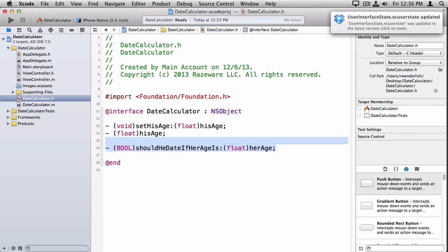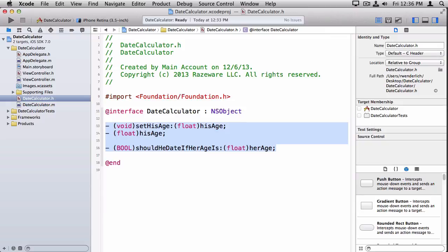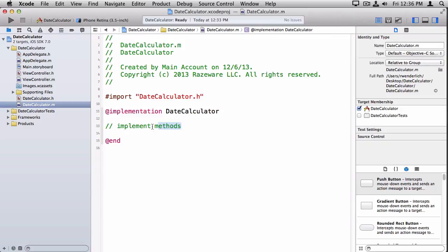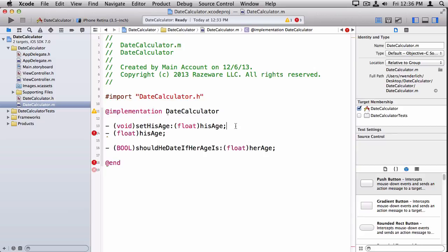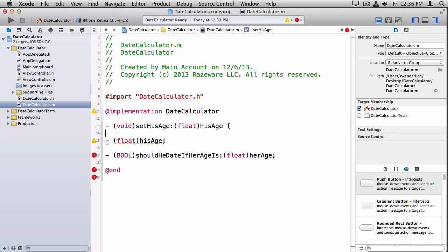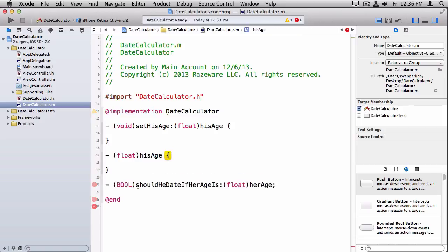Okay, so that's it for the header file. So what I want to do is I want to copy these three methods here. I'm going to switch over to datecalculator.m, and I'm going to paste them in there. And to implement a method, you just use two curly braces, and inside there you write the code that implements each of these methods.